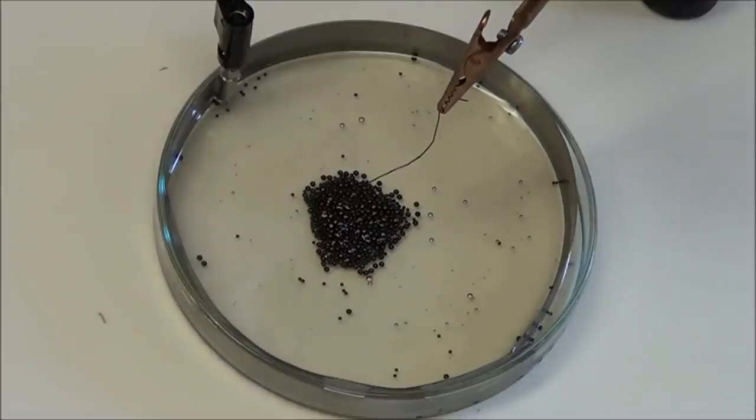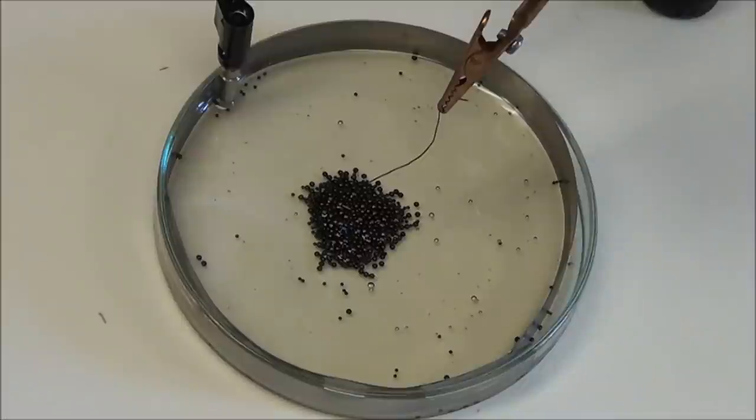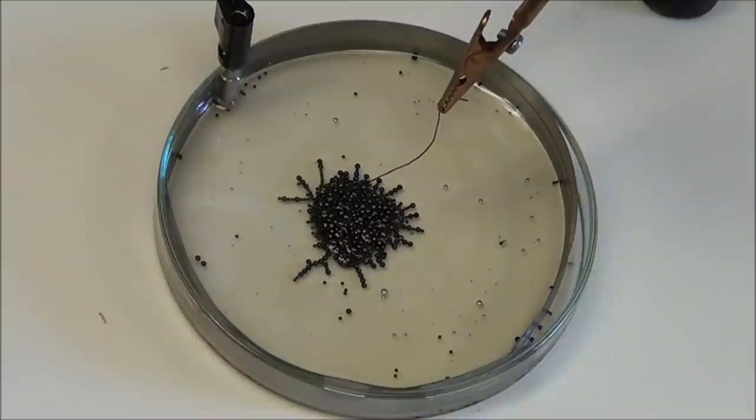Now for the fun part, we start applying voltage. At first, nothing too interesting happens. But then we notice a movement. The balls start forming chains, called shooters, that try to reach the outside of the dish.